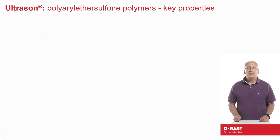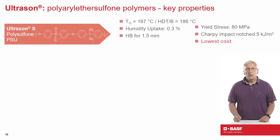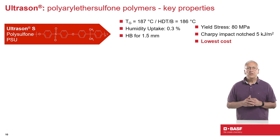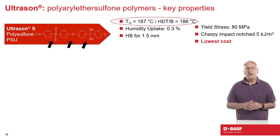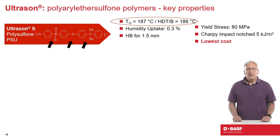Here is a little chemistry and key properties for Ultrason. Polysulfone, or PSU, is an amorphous thermoplastic polymer in which the repeat structural unit includes diphenylene sulfone, aromatic ether, and isopropylidene moieties. Glass transition temperature, or Tg, of this grade is lowest of the sulfone polymers, but still higher than most other specialty plastics. This makes PSU a cost-effective option for many applications.